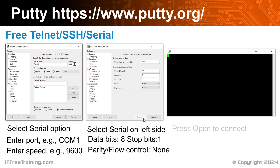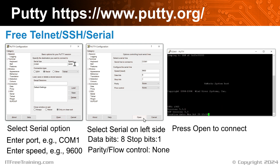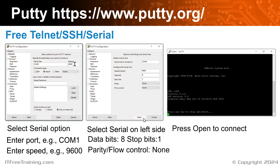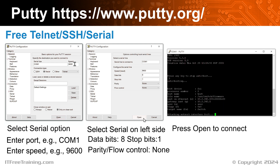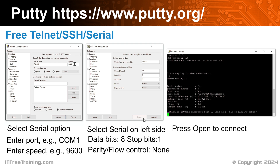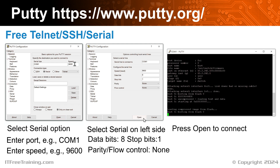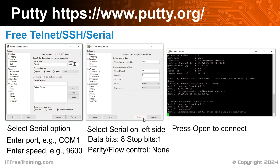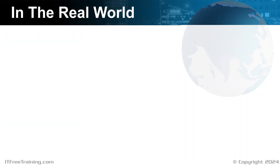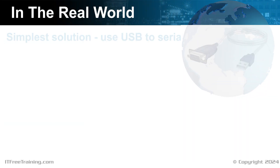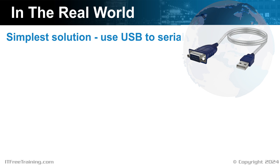Once you have the settings configured, press the Open button. This will open the terminal session to the device using the serial port. You will notice a text window will open and display the console output from the device. Using this terminal, you can also send input to the device using the keyboard. Nowadays, if you are not able to connect the device using other methods, you may need to connect using the serial port. Most administrators will connect to the device using other methods such as via the network, and only use the serial port if all other methods fail.